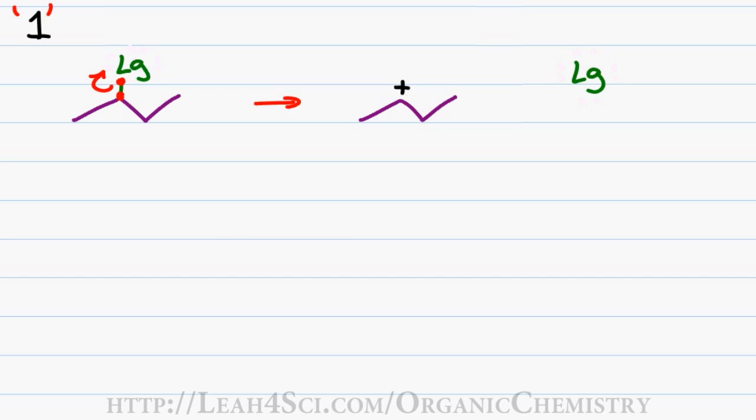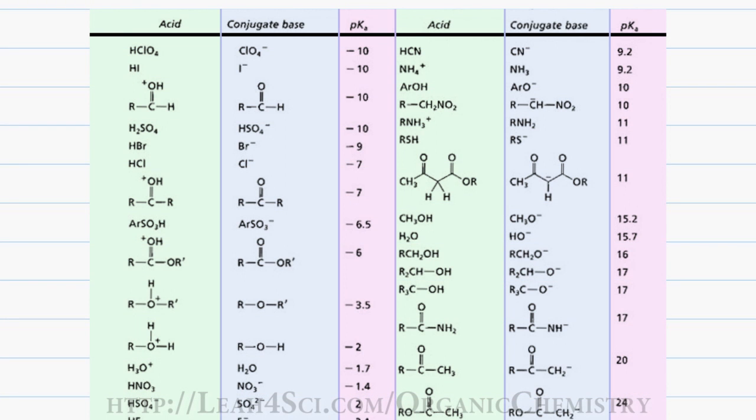As a rule of thumb, for leaving groups, a good leaving group is a weak base. In other words, it's the conjugate base of a strong acid.